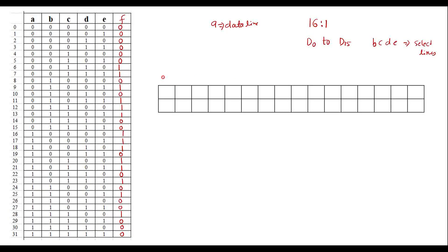So let me assume this is d0, d1, d2, d3, d4, d5, d6, d7, d8, d9, d10, d11, d12, d13, d14, d15. These are the data inputs, and here I am assuming a as the data line.